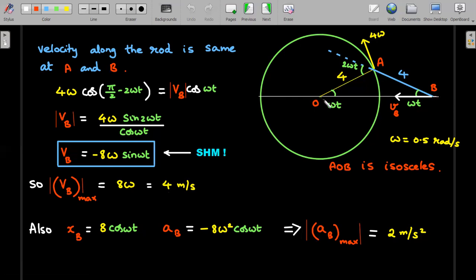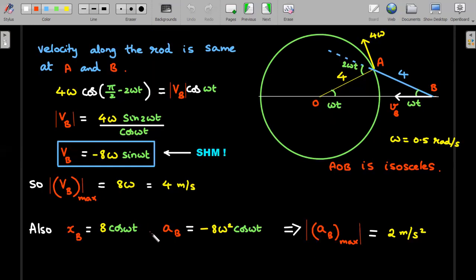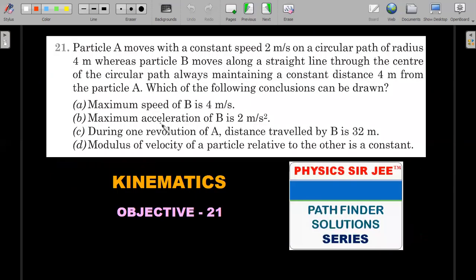Second, xB - that is the integration of this vB - gives you 8cos(ωt) plus a constant, and that constant you can substitute right at t=0. B was at 8 meters - the B's position is 8 meters - so there is no need of any extra constant, it's taken care of. Also, the differentiation of this will give you acceleration of B along the straight line, which is -8ω²cos(ωt). Therefore, the maximum value of acceleration that he asked in one of the options will come out to be 2 m/s², where it is 8ω², ω substituted as 0.5. One of the other options - he's asking during one revolution of A, distance traveled by B is 32 m. I think it's easy to check that when A goes around like this, B starts from here, goes back to this position and again comes back, a total of 16 meters this way and 16 meters back. Therefore, the 32-meter answer is also right.